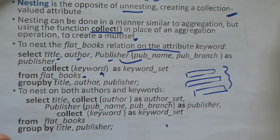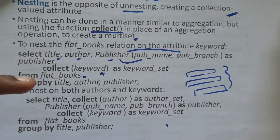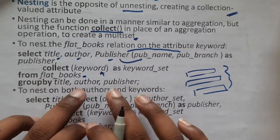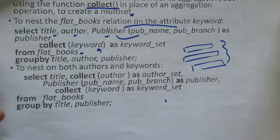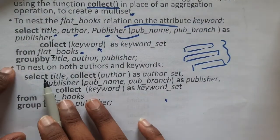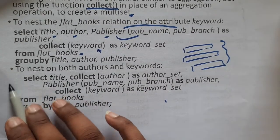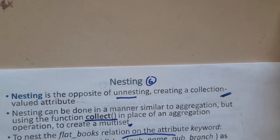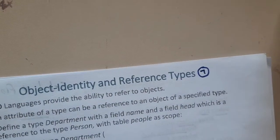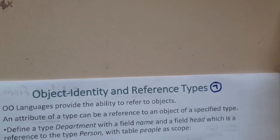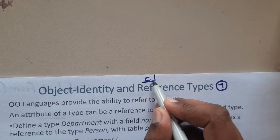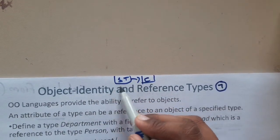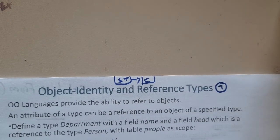In ORDER BY you arrange results; in GROUP BY you group them based on a particular thing. If the title is the same, they are grouped; if the author is the same, they are grouped; if the publisher is the same, they are grouped. Here we use all three together, meaning everything must be the same to group them into one set. Similarly, to nest on both author and keyword you can use this approach. That's a small introduction about nesting. In the next lecture, we'll go through object identification — we discussed structural type, which is indirectly a class concept. Thank you for watching.